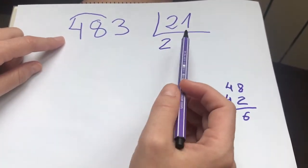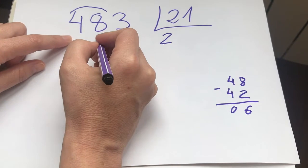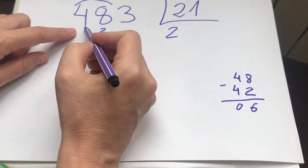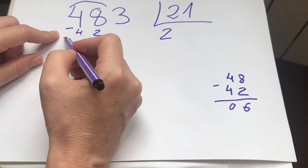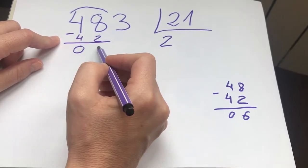Otra forma es directamente 2 por 1, 2. 2 por 2, 4. Y lo hago aquí directamente. Y entonces me saldría el 0 y el 6.